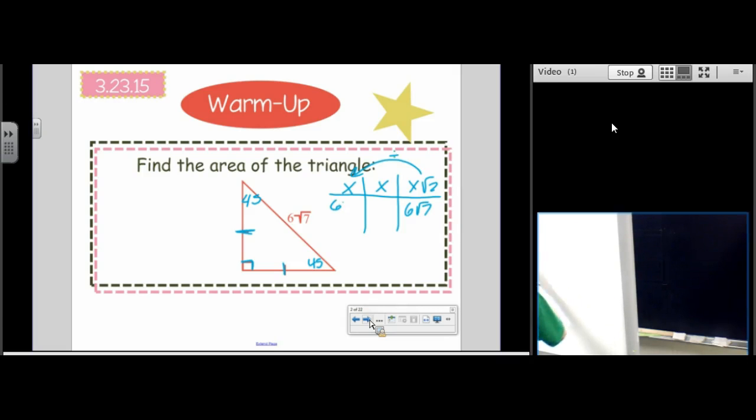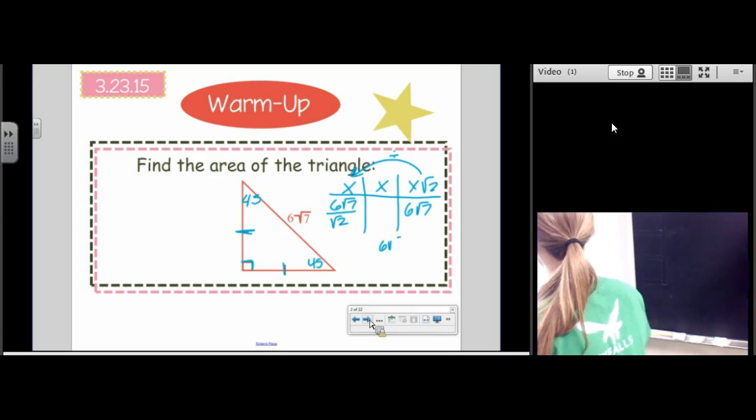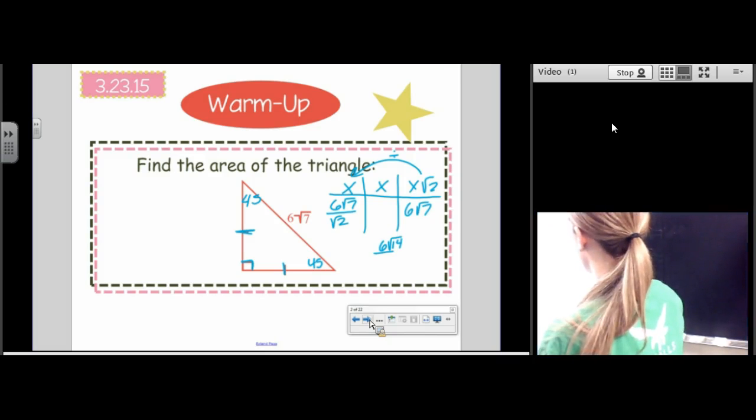So 6 root 7 over root 2. Then we rationalize our denominator. We get 6 root 14 over 2, which would be 3 root 14. Very good.